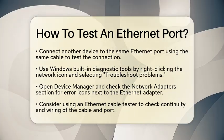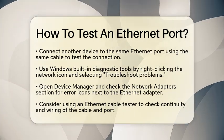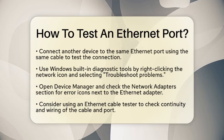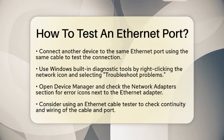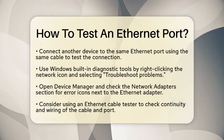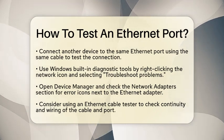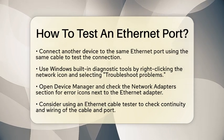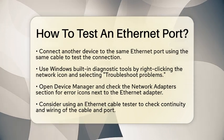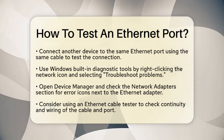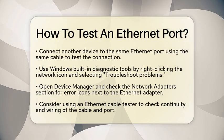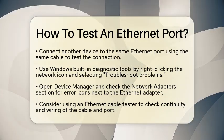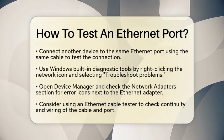Next, let's check the Device Manager. Open it up and expand the Network Adapters section. Look for your Ethernet adapter and see if there are any error icons next to it. If you see a red X or a yellow warning symbol, that could indicate a problem with the adapter or port.